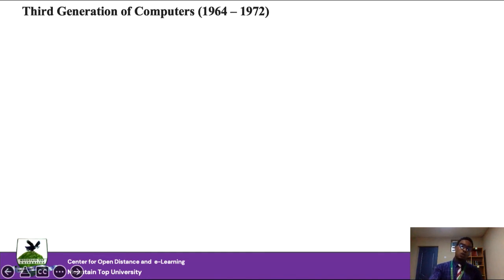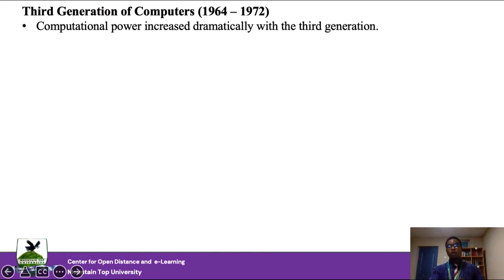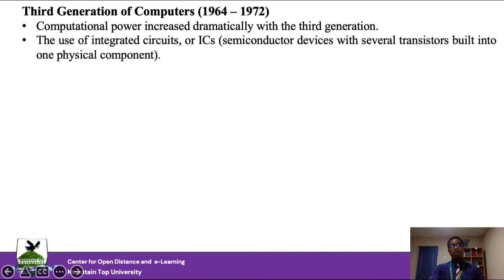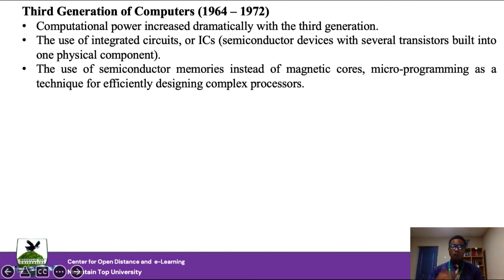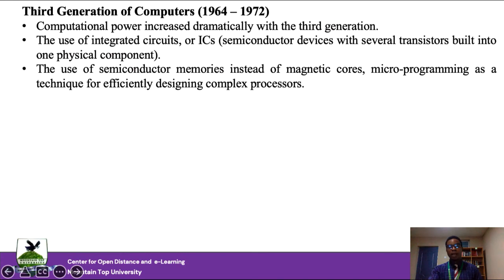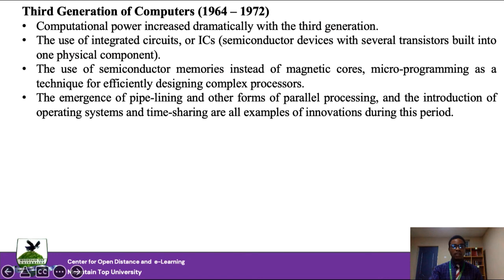As development of computer processors continued, computational power needed to increase. The concept of large-scale integration emerged — transistors were compiled and brought together, leading to the construction of integrated circuits (ICs) with multiple transistors embedded together, giving computers more processing power. This was motivated by the use of semiconductor memories instead of the magnetic cores used in earlier generations. The semiconductor era caused a great revolution in computer science by the third generation, enabling multiprocessing and parallel processing instead of batch processing.